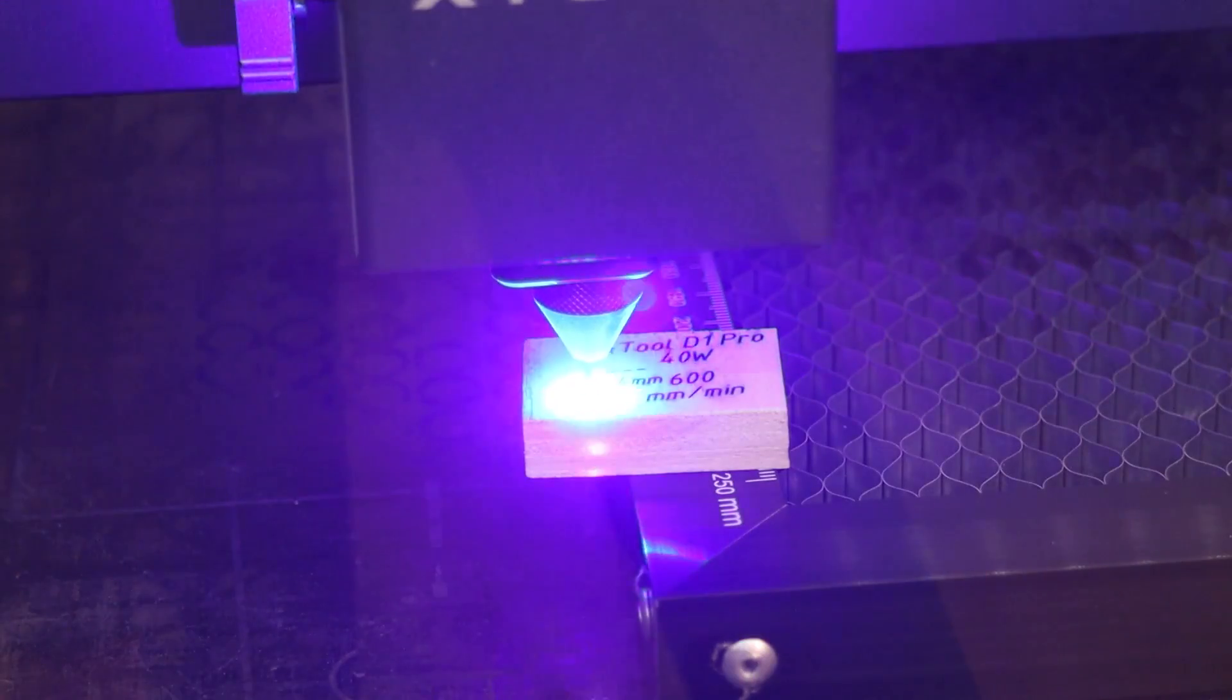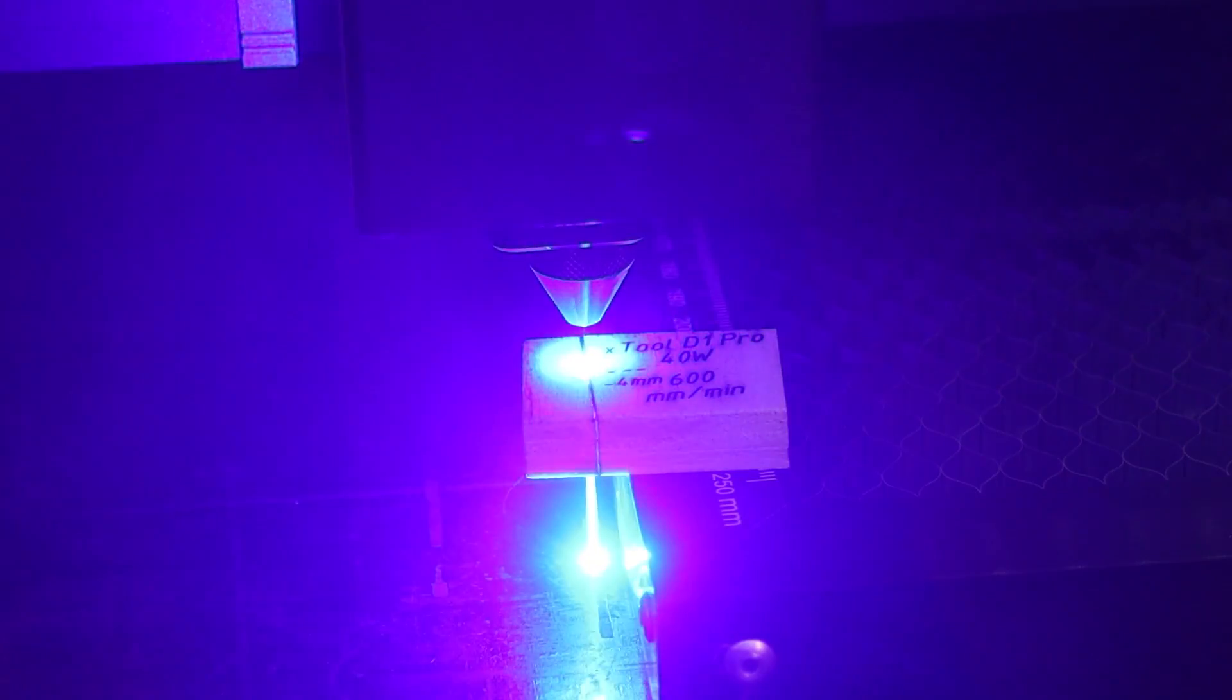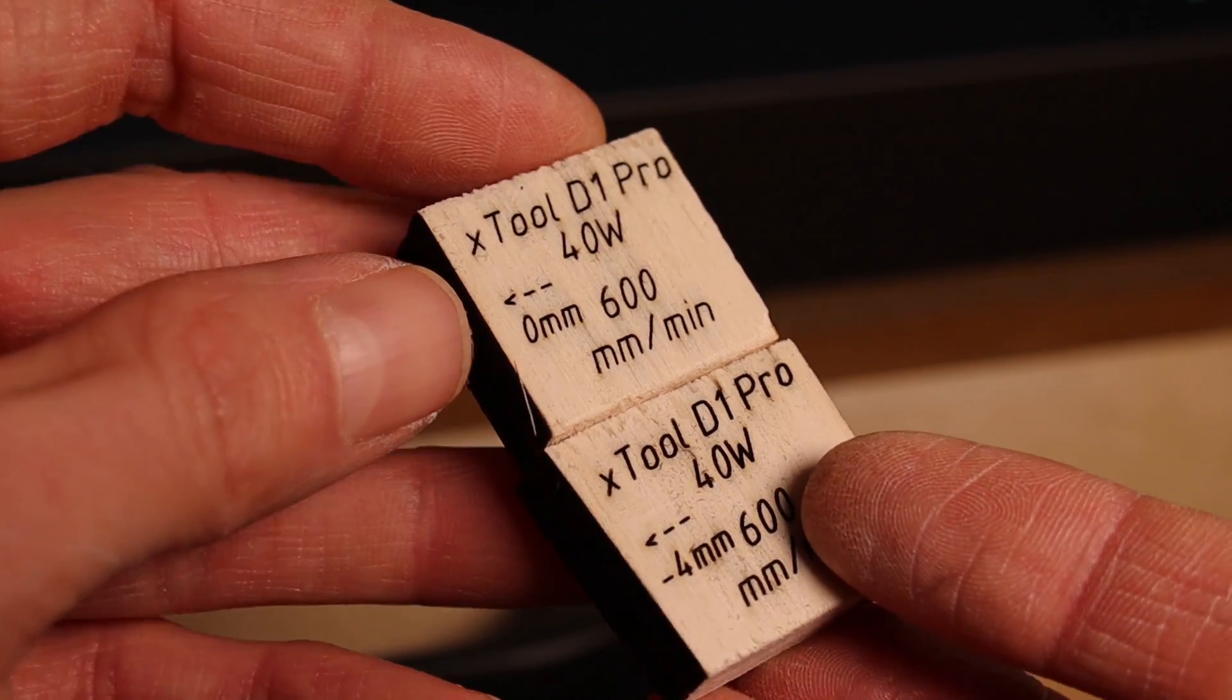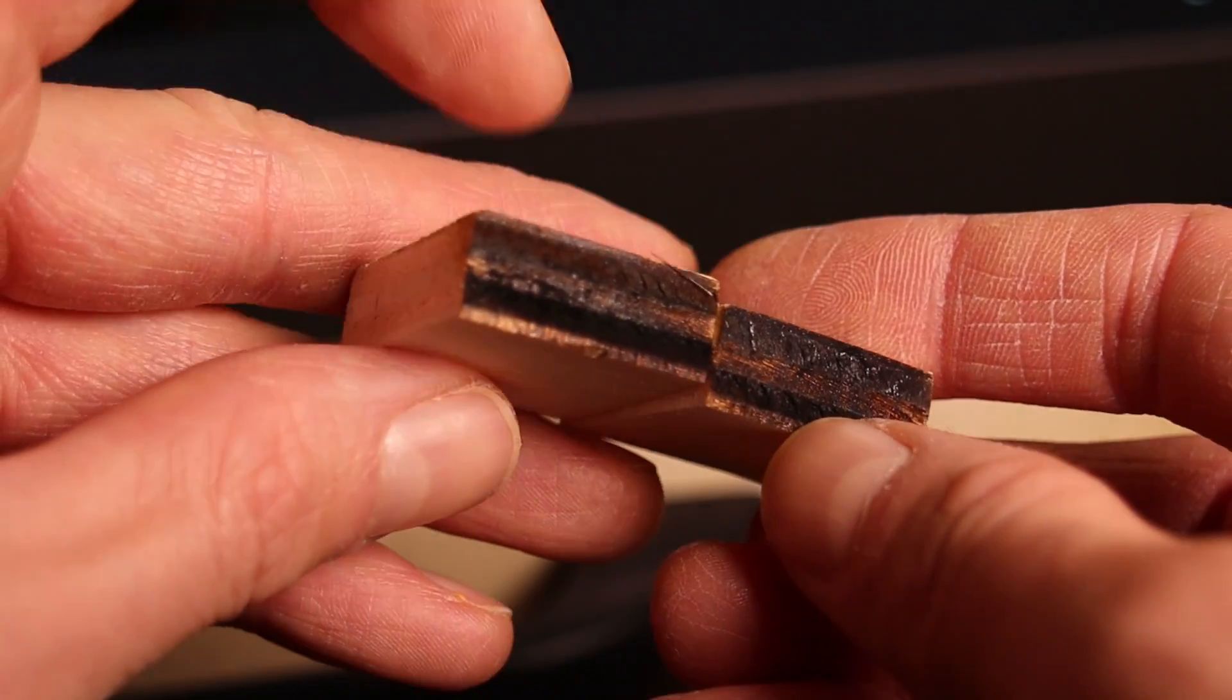First time I cut it without lowering the focus spot and the second time I lowered the focus spot by 4mm, but it didn't make much difference as it cut through in two passes both times. Both cuts are relatively clean without significant charring.